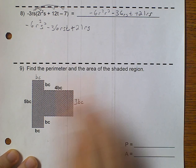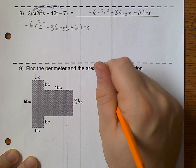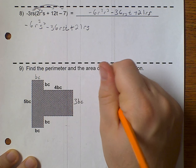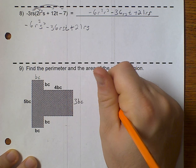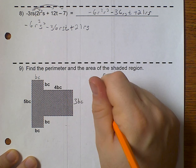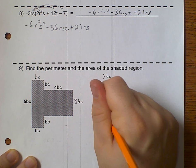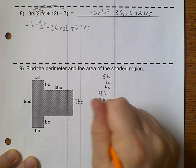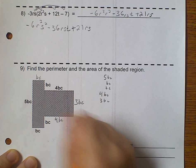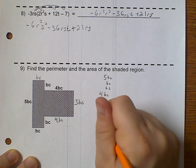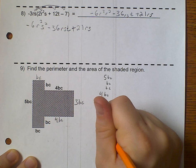So, if I want to find the perimeter, well, I've got 5 bc, plus bc, plus bc, plus 4 bc, plus 3 bc. But, that would also be 4 bc, plus bc, plus bc.